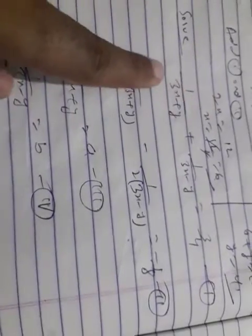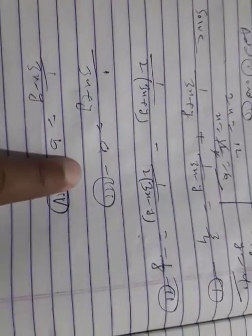So first we have to convert it in the form of linear equation. For this, suppose that 1 by 3x plus y is equal to a, and 1 by 3x minus y is equal to b.